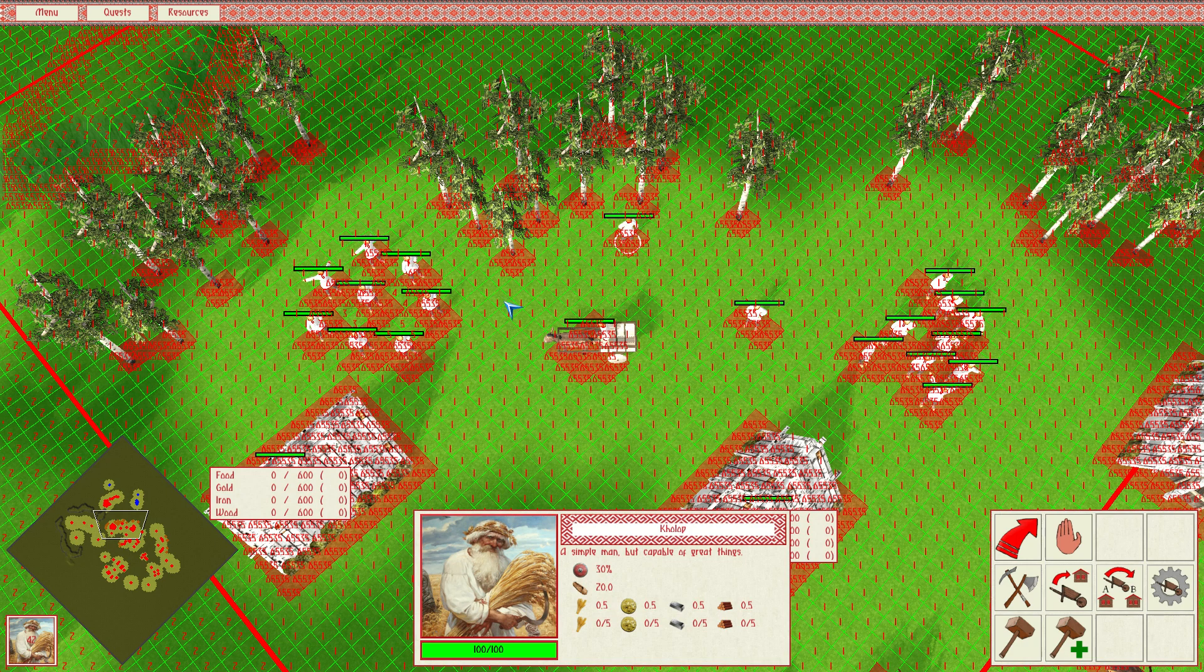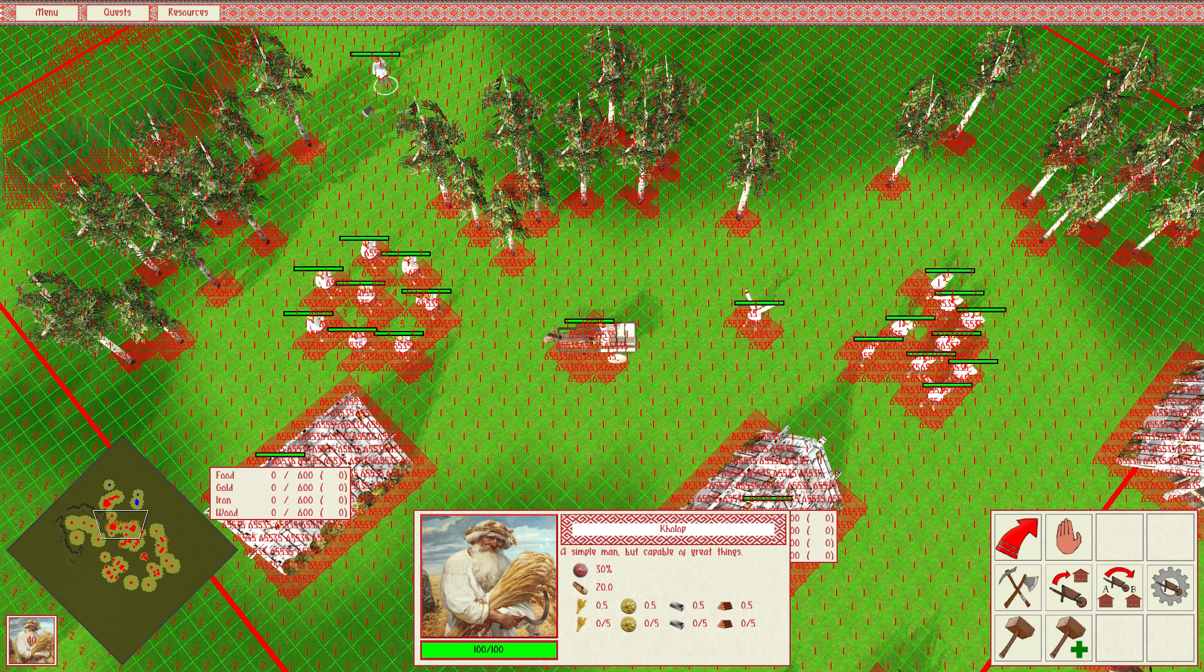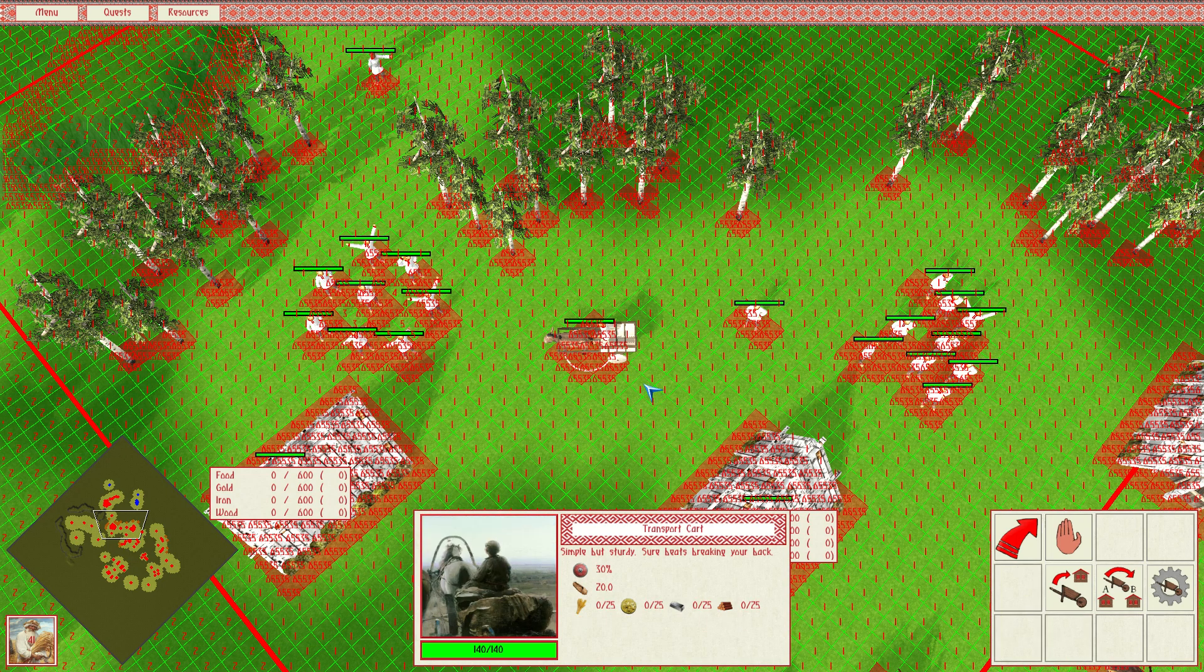What I mean by that is I want the pathfinding system to account for the fact that this unit here should be able to fit in this narrow one-by-one corridor between the trees and go through this corridor if there's most efficient path. But a larger unit like this transport cart should not go through this one-by-one corridor as it's too large to fit, and if it were to take this path its hitbox would overlap with the nearby trees.